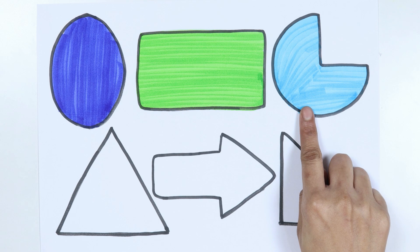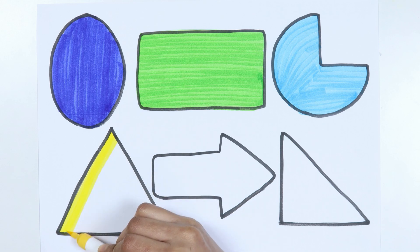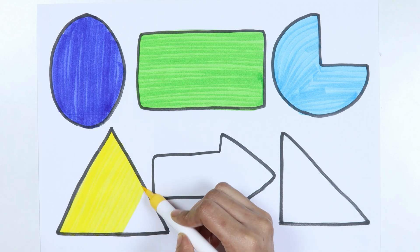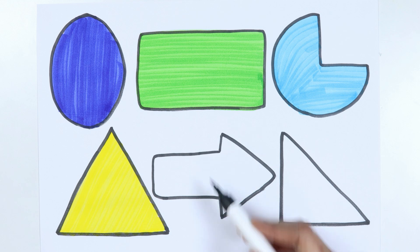Pie, yellow color. Triangle, black color.